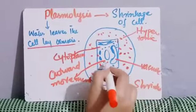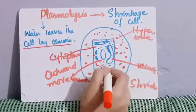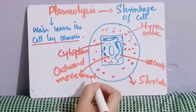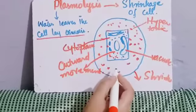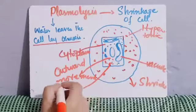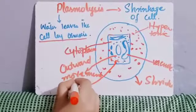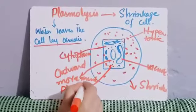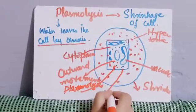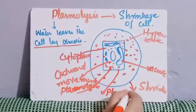And due to this shrinkage, this cytoplasm pulls away from the cell wall. So this process is known as plasmolysis. And the cell is known to be in the plasmolysis state.